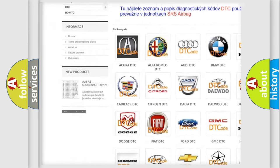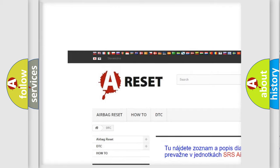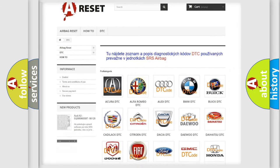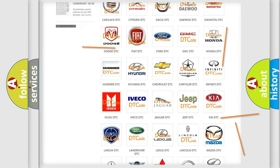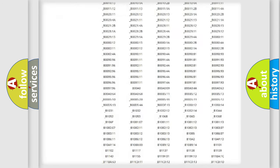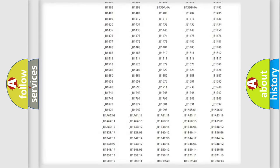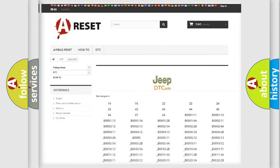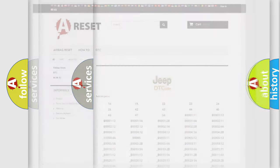Our website airbagreset.sk produces useful videos for you. You do not have to go through the OBD2 protocol anymore to know how to troubleshoot any car breakdown. You will find all the diagnostic codes that can be diagnosed in Jeep vehicles, and also many other useful things.